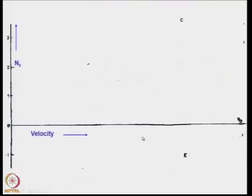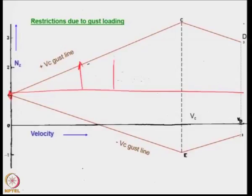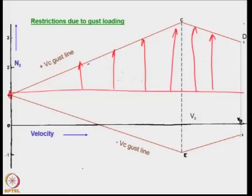Let us see what happens to the V-n diagram. This is the restriction with the gust loading. Notice that they are starting from 0, 1 because the aircraft is supposed to be in level flight. In level flight at various velocities, due to gust, additional load factors are created. We also remember that at speeds beyond Vc, the numerical value of the gust velocity is lower. Therefore, you can see that the load factors introduced also are lower.